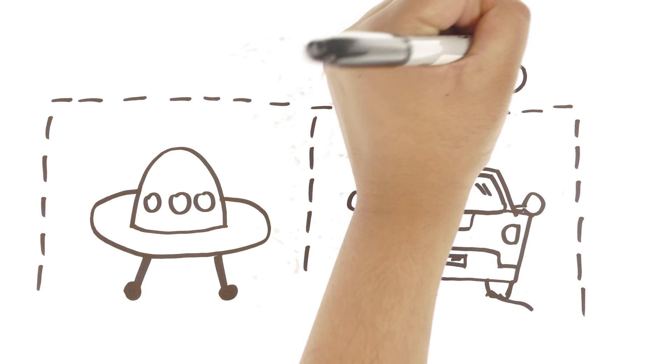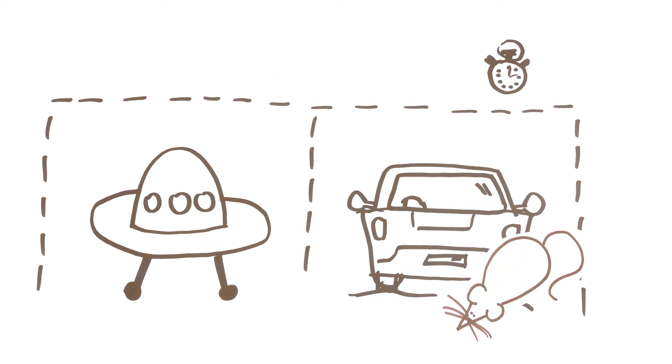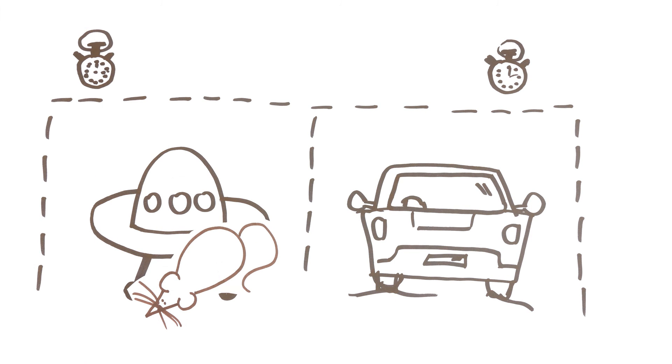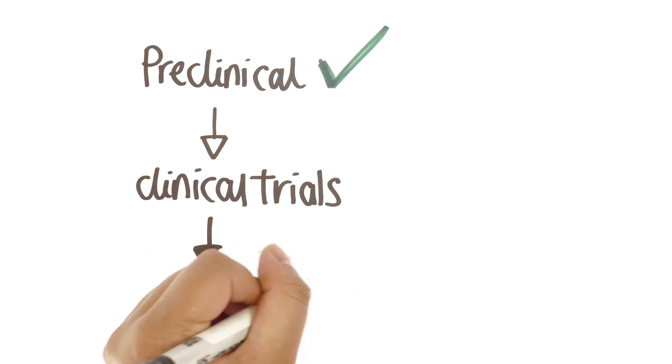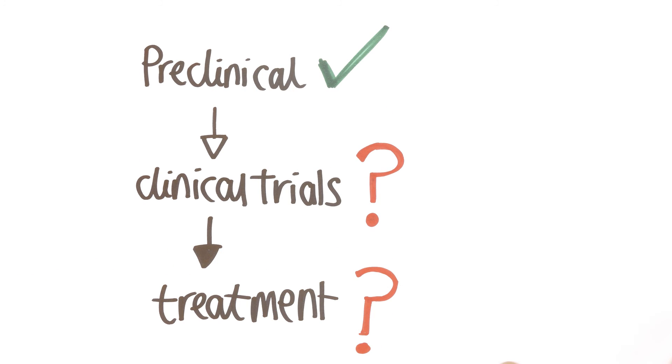So by timing how long a mouse spends exploring the new object compared to the one it's familiar with, we can measure whether the mouse can remember the object it has already seen. This is promising early stage research, but before we know how effective it is in Alzheimer's patients, much more needs to be done.